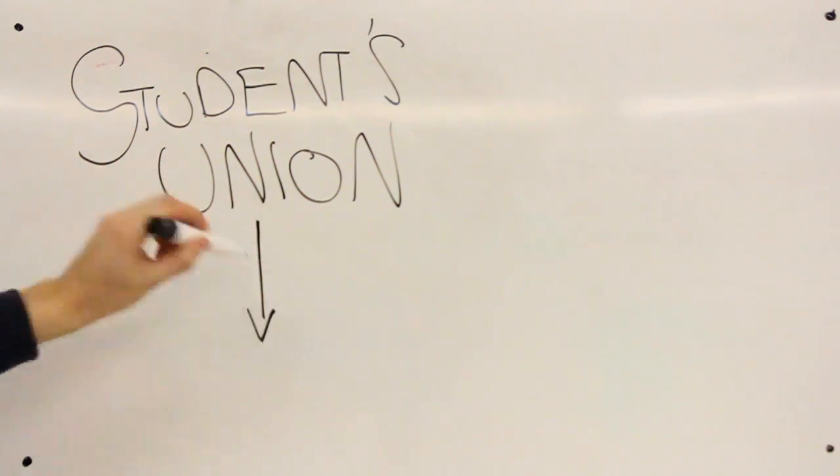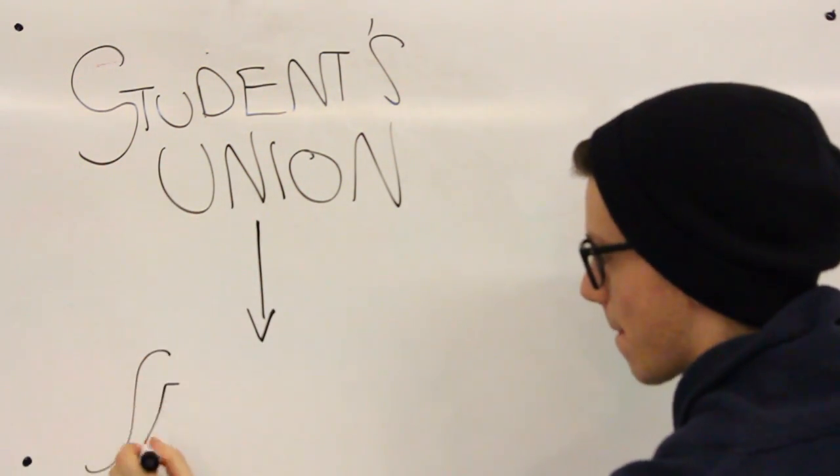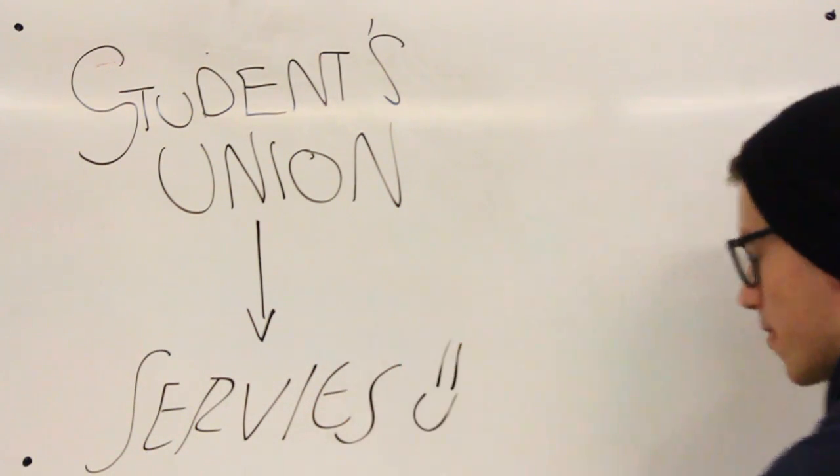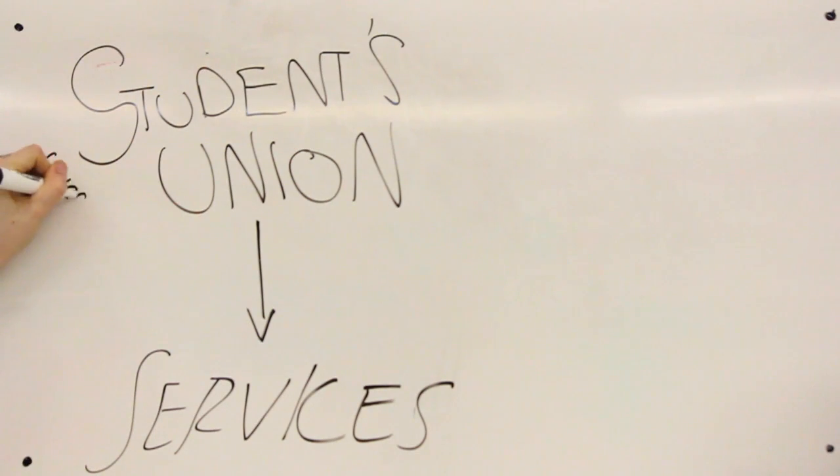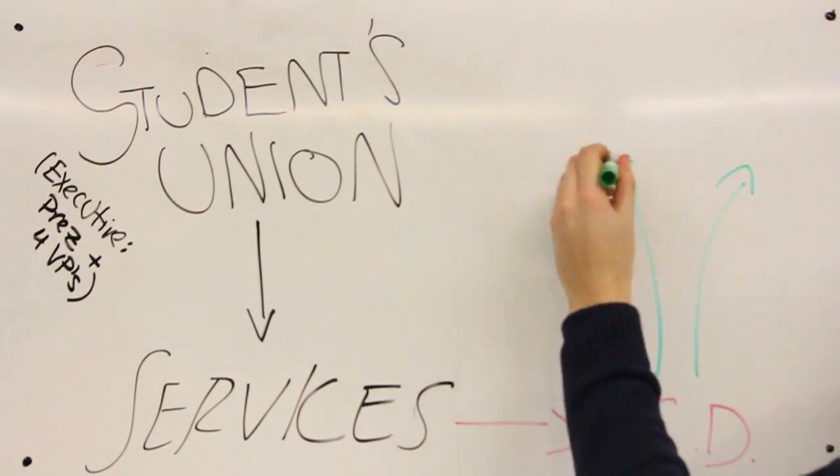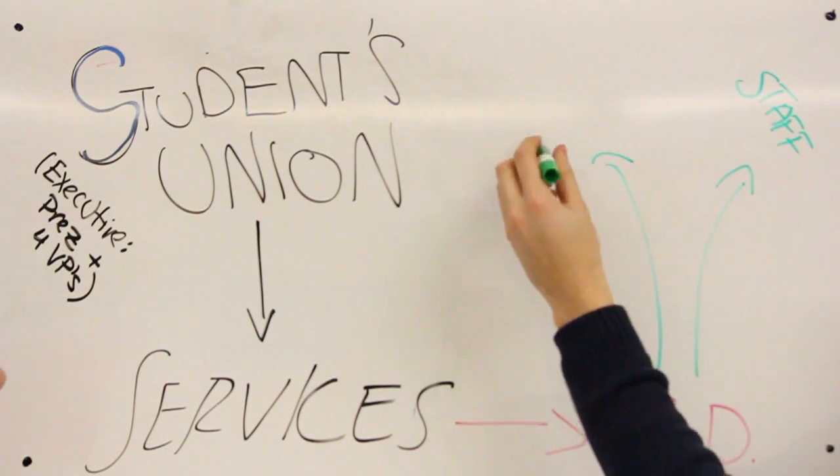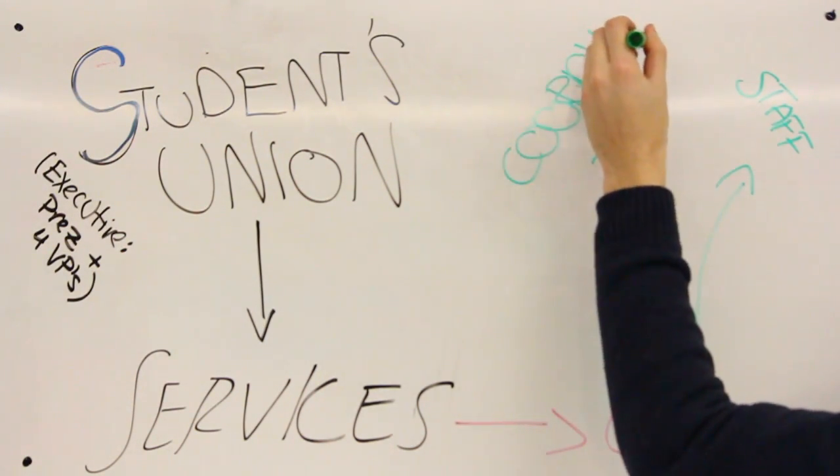One office in the Students' Union is the Centre for Student Development, or the CSD for short. The CSD offers a number of programs, including orientation. The Centre for Student Development has a manager and an assistant manager who work full time to support a number of student coordinators. This year, there are three coordinators: Shadi, Alicia, and Edward.